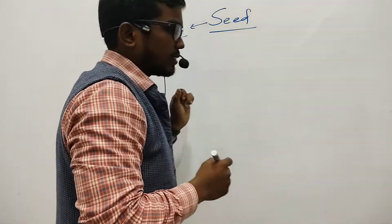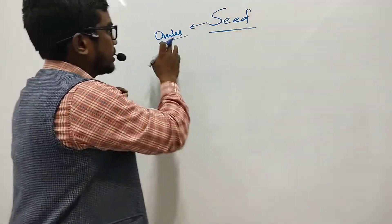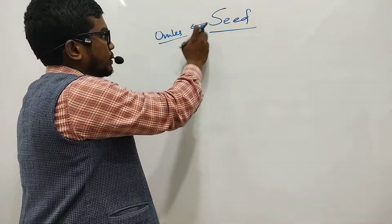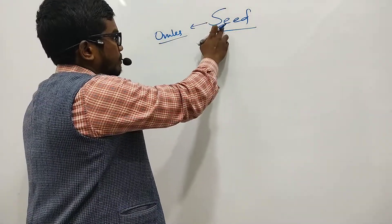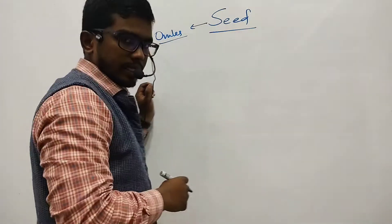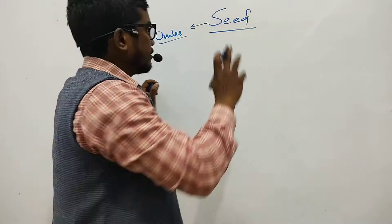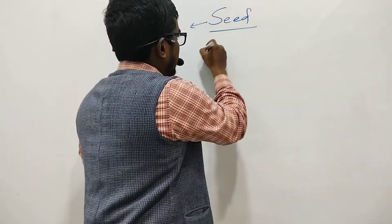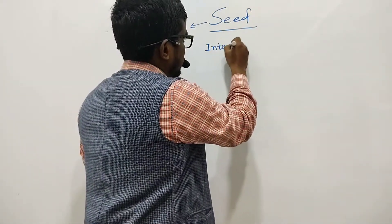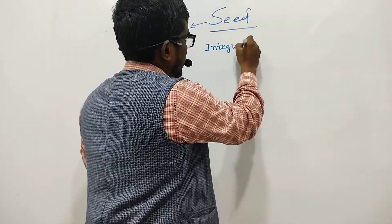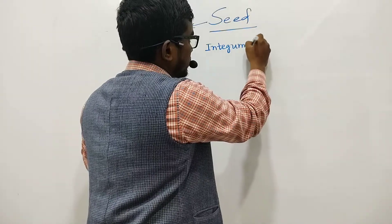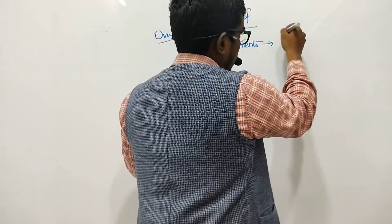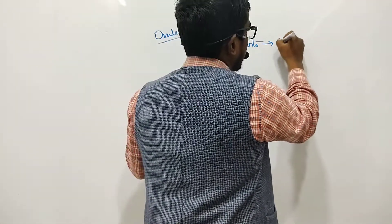Let us understand what structures of the ovule develop into the different parts of the seed. For example, the integuments of the ovule form the seed coats.